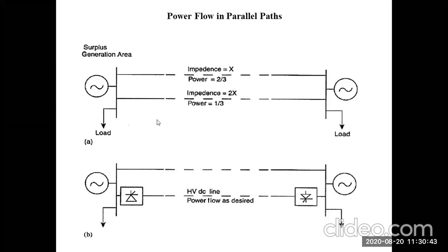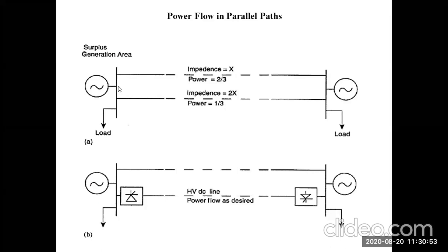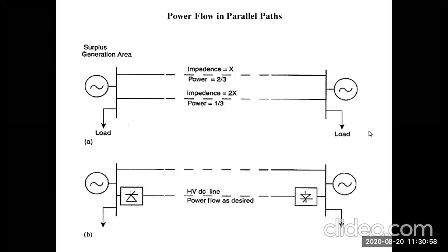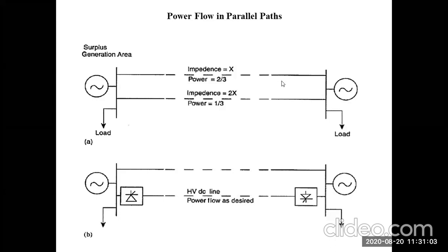Consider Figure A here: two sources are available, these are the generating sources, and two lines are connected to the same generating sources, each having respective loads. The dotted line represents it is traveling for some long distance. We have also discussed the HVDC part and why we prefer HVAC or FACTS techniques instead of HVDC, or when HVDC is preferred — all these things have been discussed in the previous session.